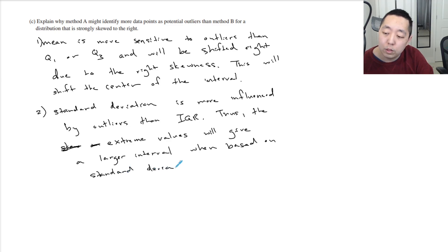So I would say both of those two points are things that would affect the fact that the fence or the range of what is an outlier is now larger. One, because the mean is shifted right, and then the standard deviation becomes wider or the range becomes wider because the standard deviation is more influenced by those larger points than the IQR.